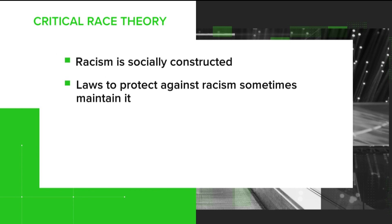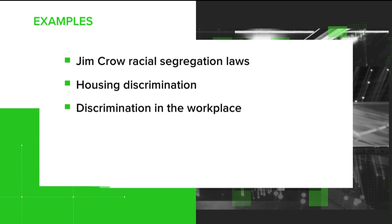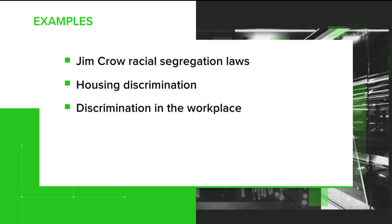CRT is based on the premise that racism is socially constructed and that laws designed to protect against racism sometimes maintain it instead. For example, when legalized slavery ended, discrimination against Black people legally continued through Jim Crow racial segregation laws.